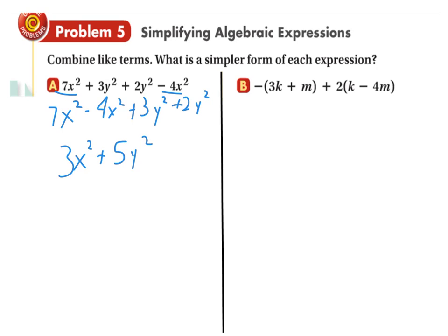With example B here, we'd have to distribute the negative through the parentheses. So negative 3k minus m plus, and then we would distribute the 2 through, 2k minus 8m. Now we can combine the k's, negative 3k plus 2k minus an m minus an 8m. So we actually end up with a negative 1k, so negative k and a minus 9m.